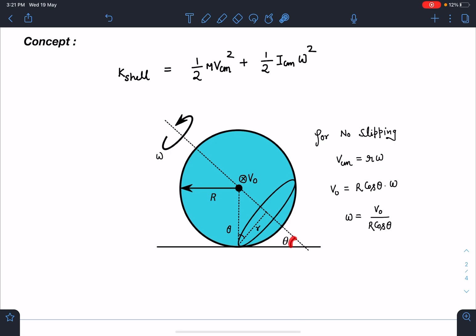If this angle is theta, then this small r can be written as R·cos(θ). Remember, point P's center will be just above this at a radial distance of R, so this distance becomes R·cos(θ).